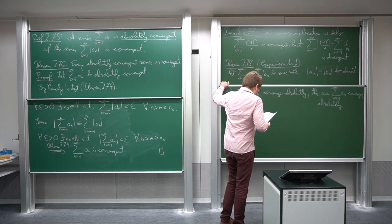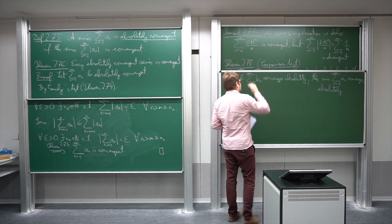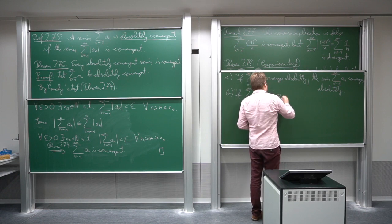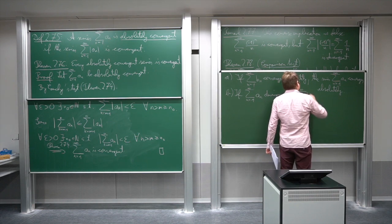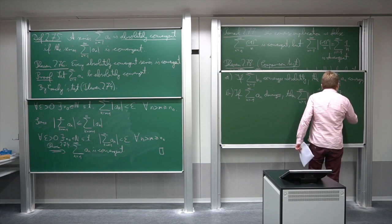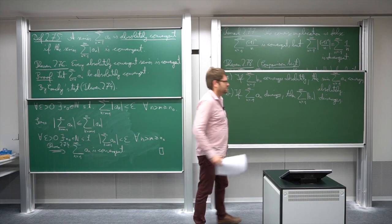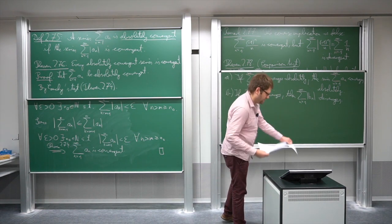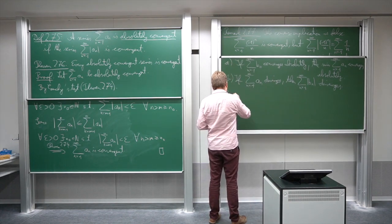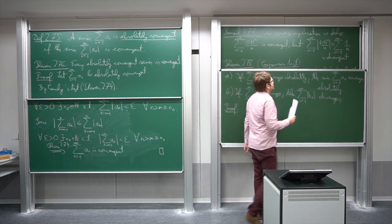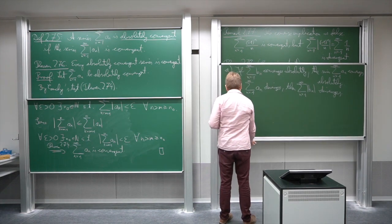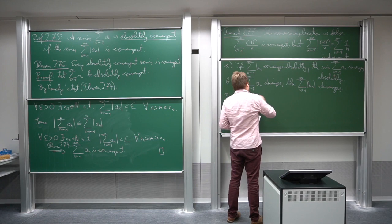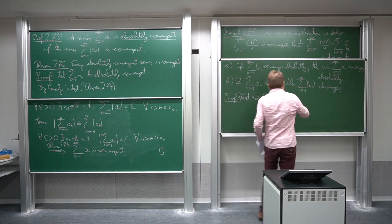Second part: if the series over a_n diverges, then the series containing the absolute values of b_n also diverges. We cannot directly derive divergence of b_n itself, so we must be careful. The absolute values are necessary here. Let n_0 be such that |a_n| is less than or equal to |b_n| for all n greater than or equal to n_0. Then for all n greater than n_0 we can make a nice estimate.